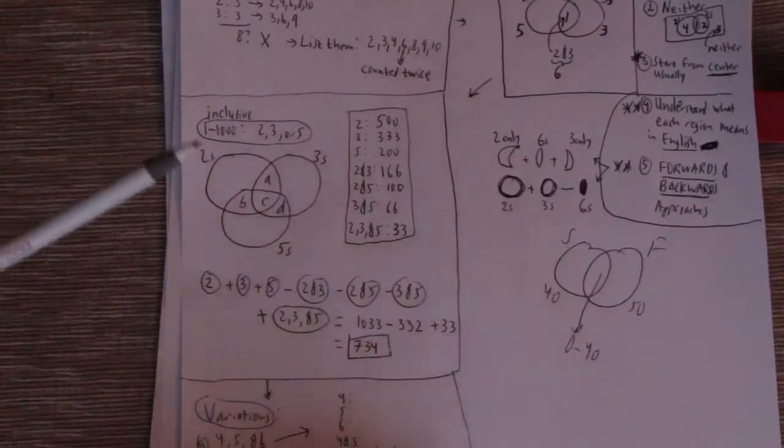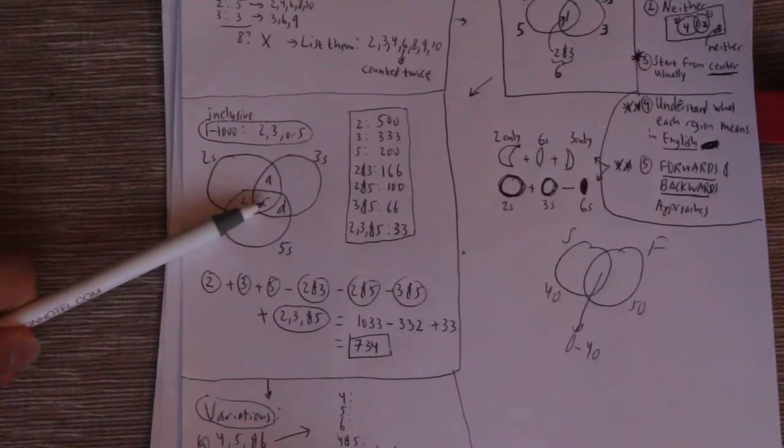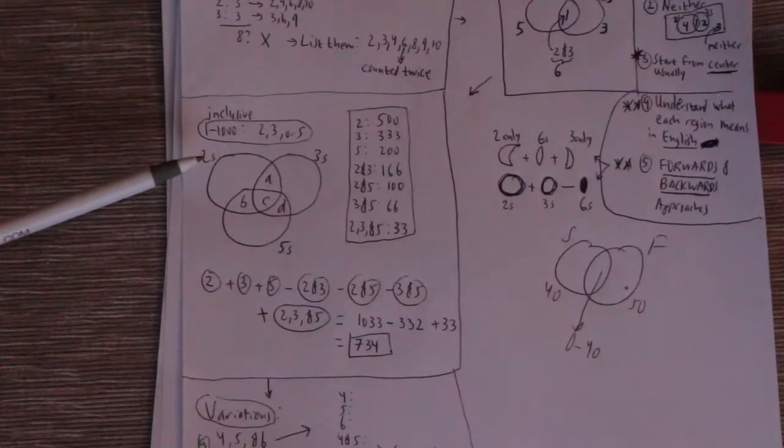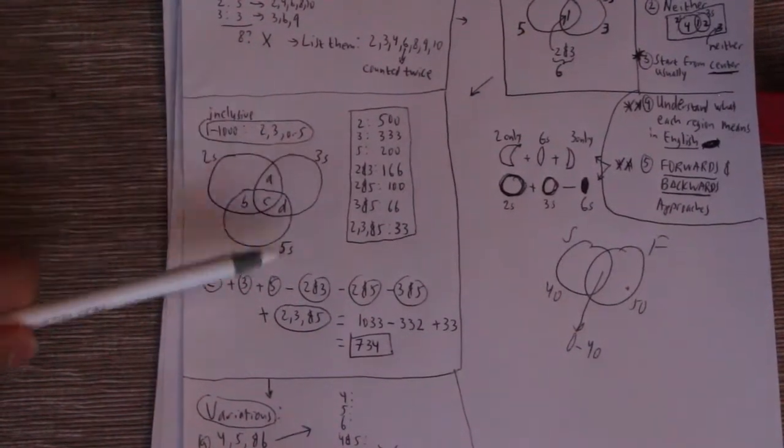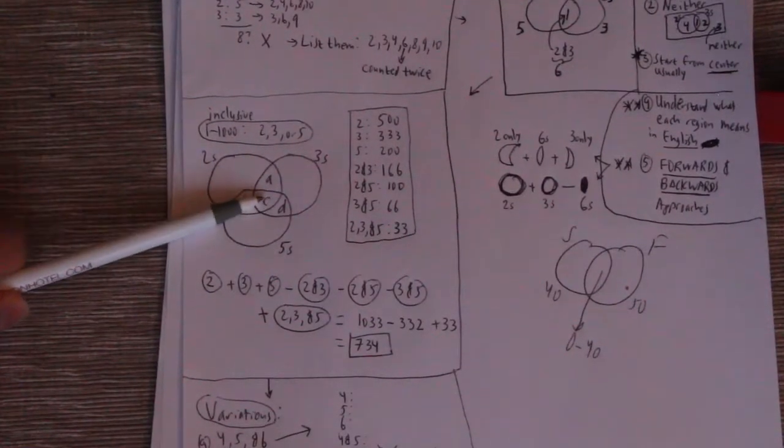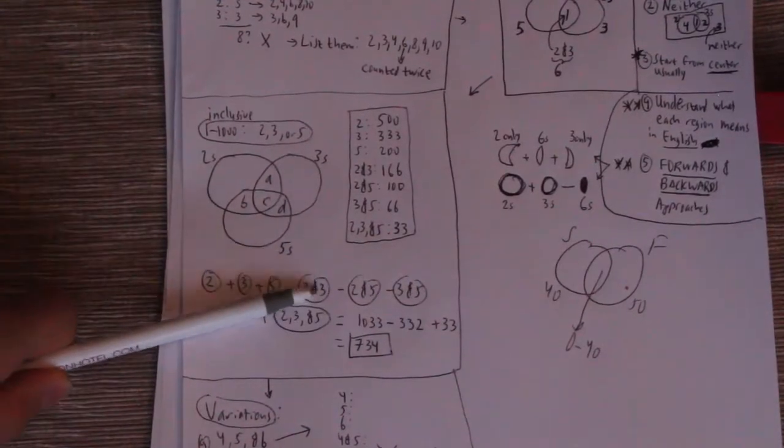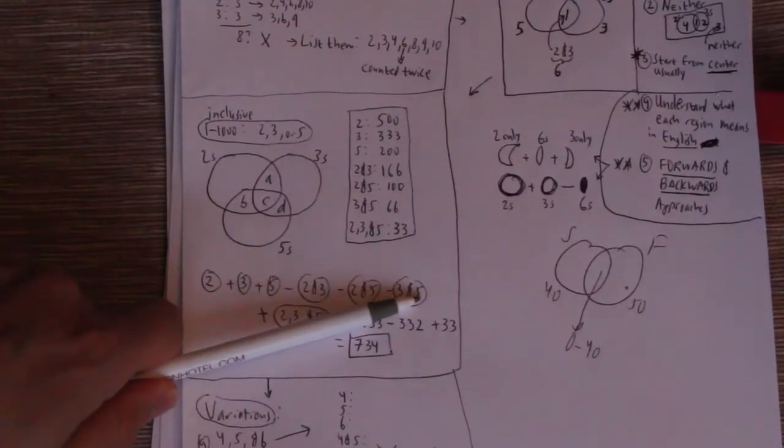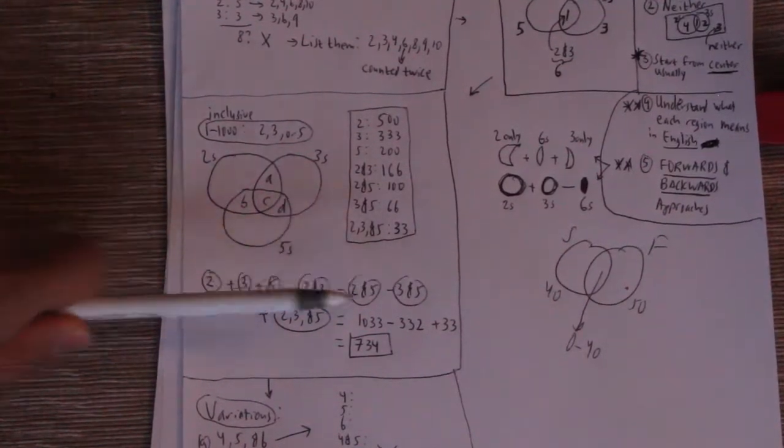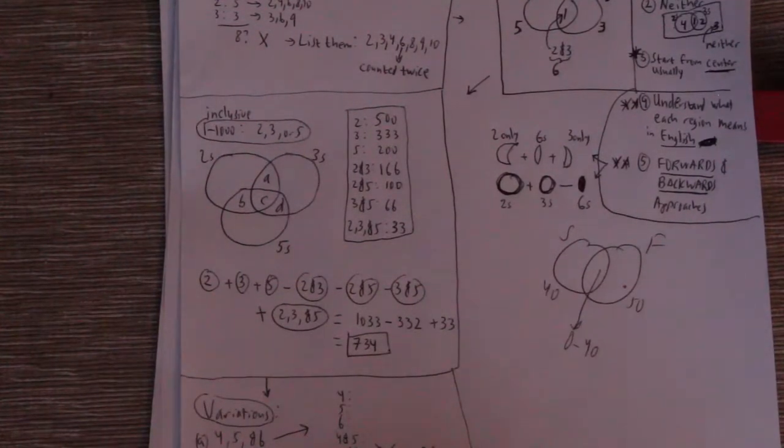Because now we have to think, what happens to region C? How many times have we counted it so far? So when we added up the circles, the twos, threes, and fives, we basically got three Cs because C is part of all three circles. Now when we subtracted off each of these pairs, each of them also includes C. So we basically counted C three times, and then subtracted it three times. So three minus three gets a zero, which means we've never even counted C.